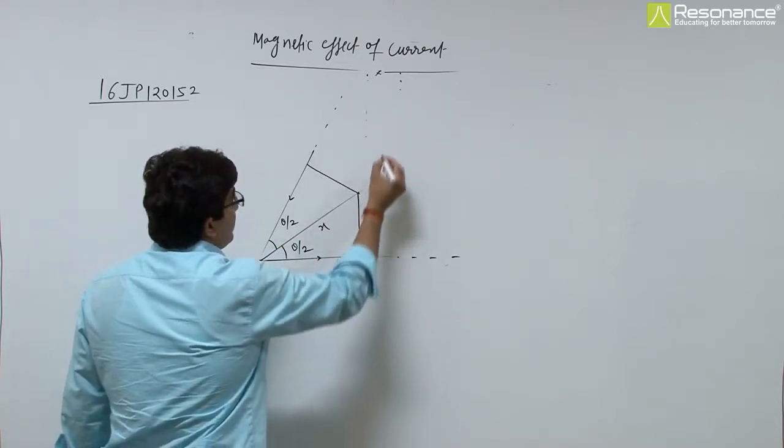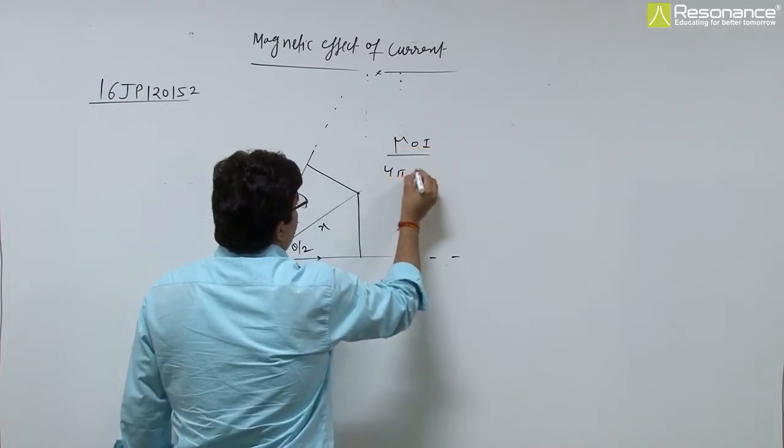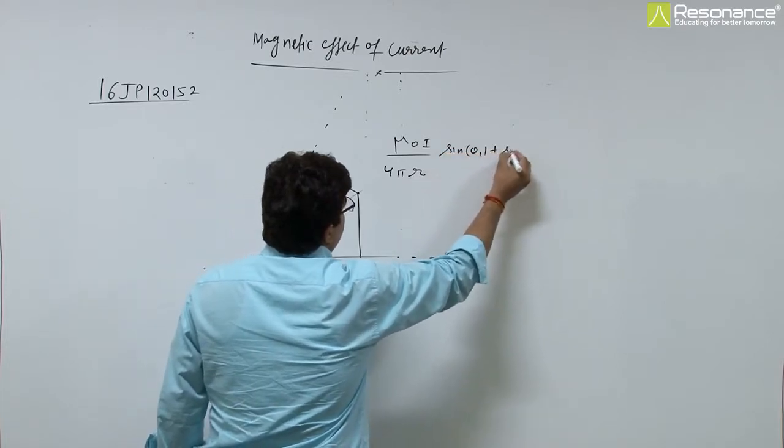So due to one wire, it is mu 0 i by 4 pi r times sin theta 1 plus sin theta 2.